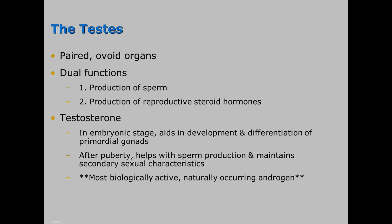In the embryonic stage, testosterone aids in the development and differentiation of primordial gonads. After puberty, it helps with sperm production and maintains secondary sexual characteristics. It is the most biologically active naturally occurring androgen.